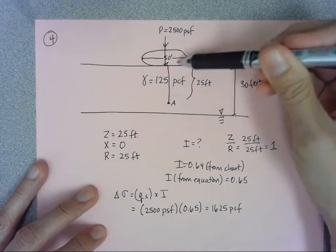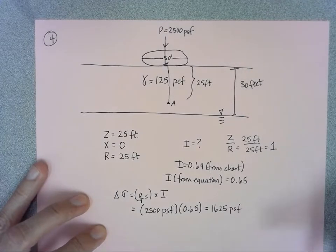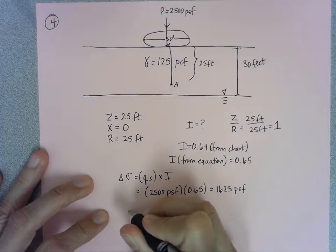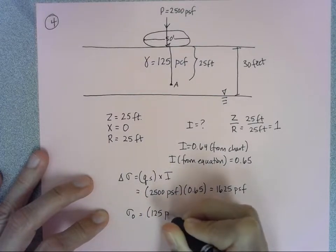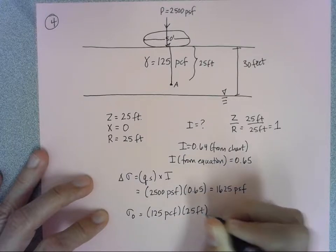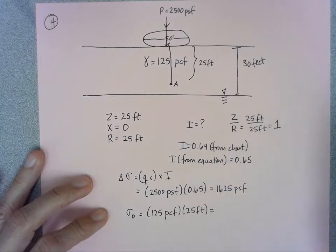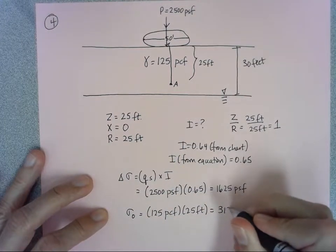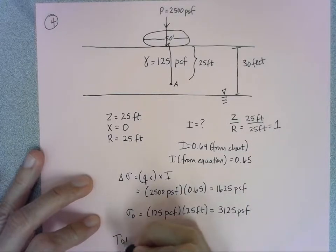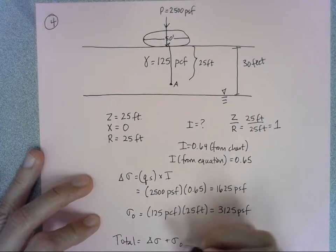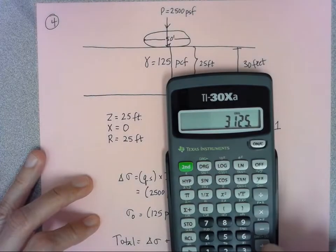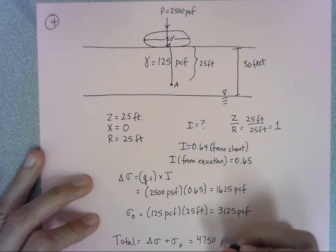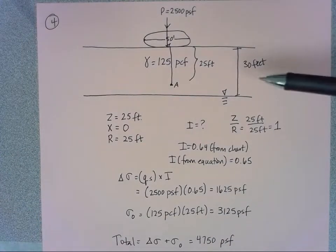But I'm not done yet because I need to also figure out this depth as well. I'm going to add on that strata here, sigma naught of 125 pounds per cubic feet times 25 feet. Remember I don't have to subtract off the water because the water is underneath it. So 125 times 25 gives me 3125. To find that total I'm going to add that delta sigma plus my initial state, so 3125 plus 1625 and that gives me 4750 pounds per square foot.